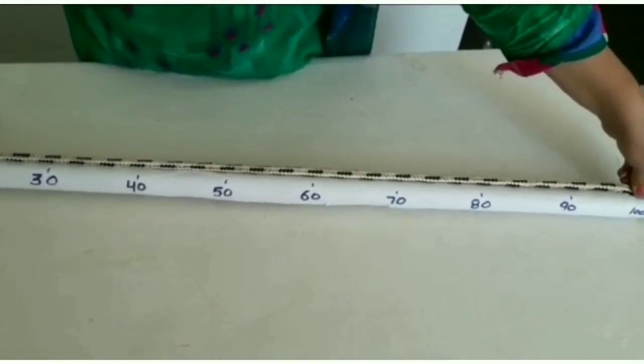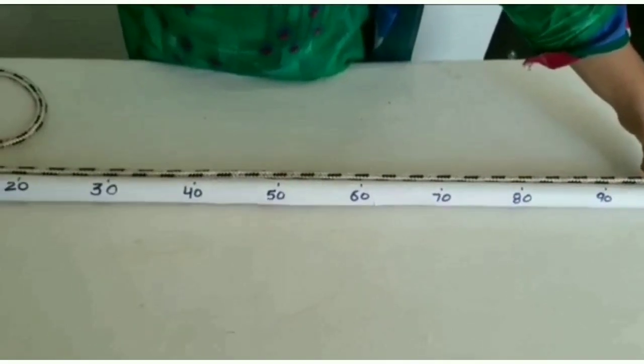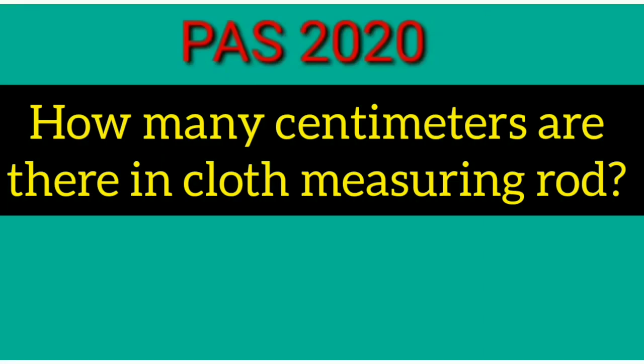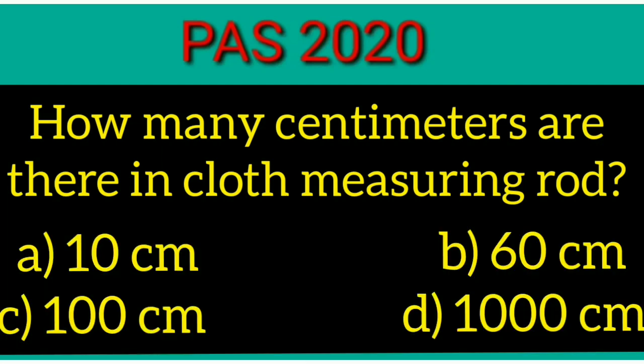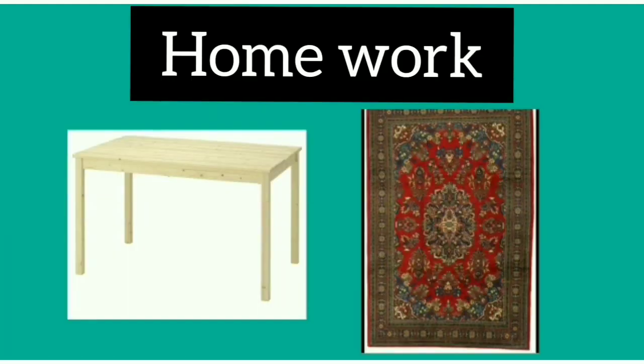Now students, it's time to solve PAS related questions. How many centimeters are there in cloth measuring rod? Option A: 10 centimeters, option B: 60 centimeters, option C: 100 centimeters, and option D: 1000 centimeters. Correct option is C: 100 centimeters. Homework: find the length of these objects.